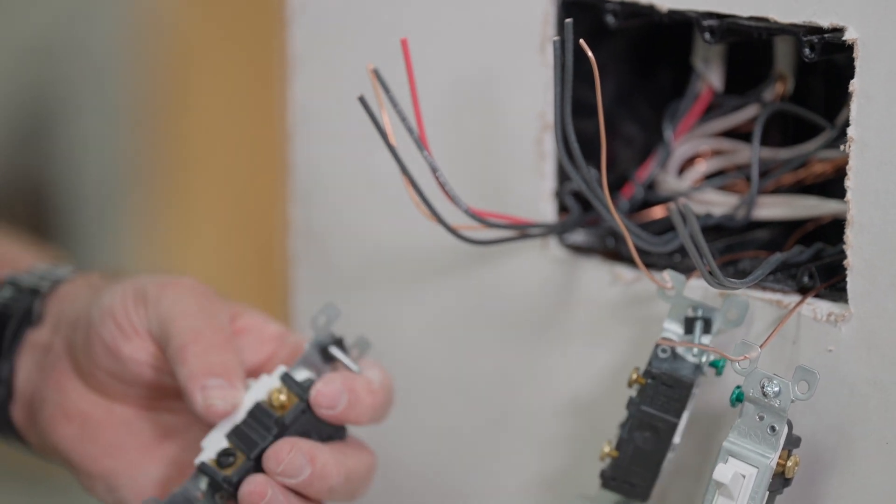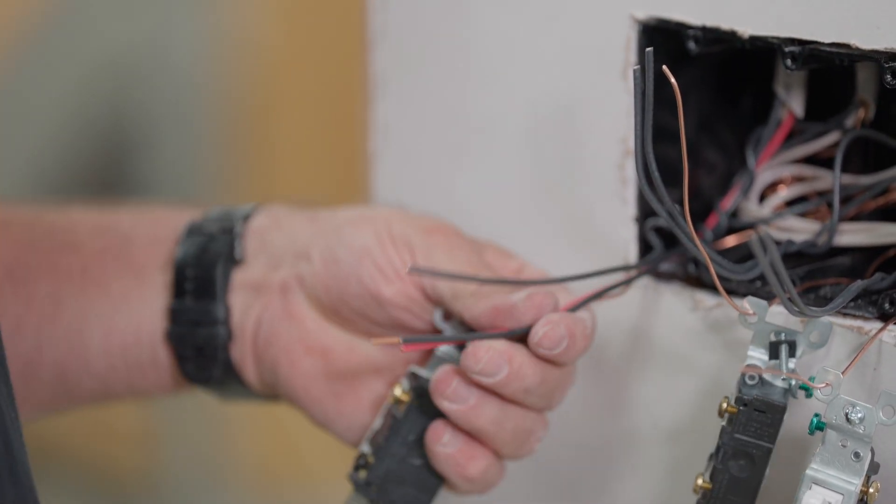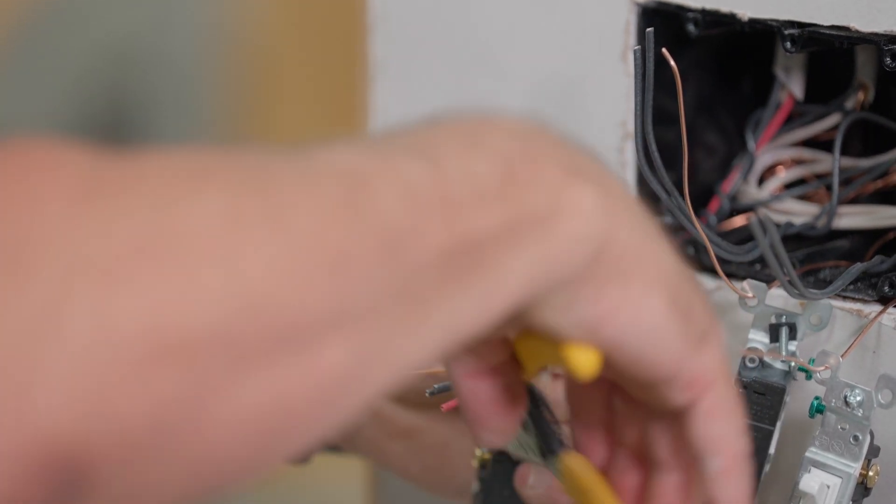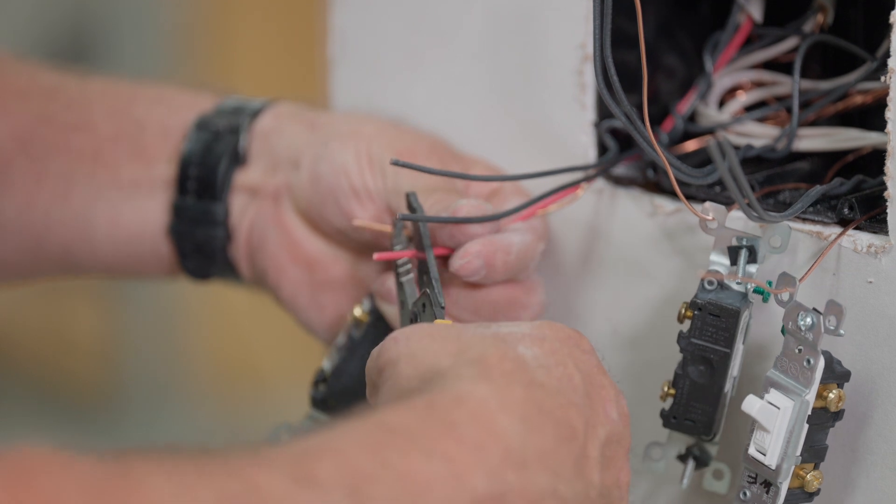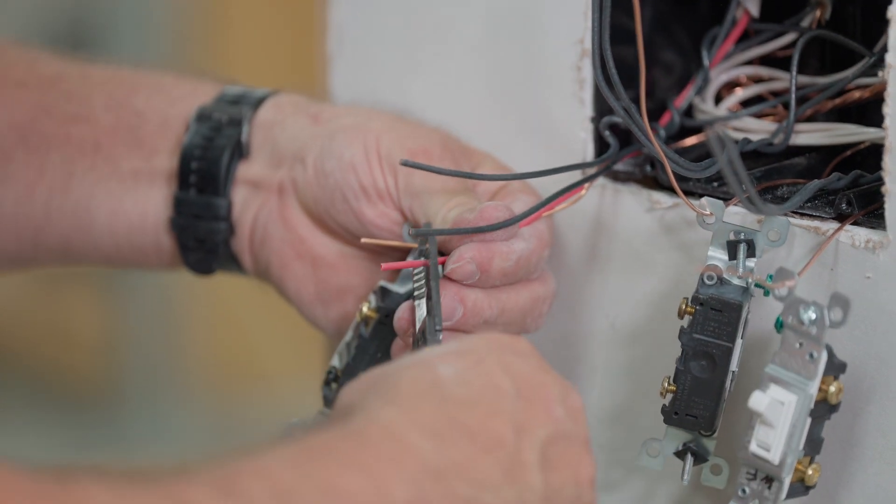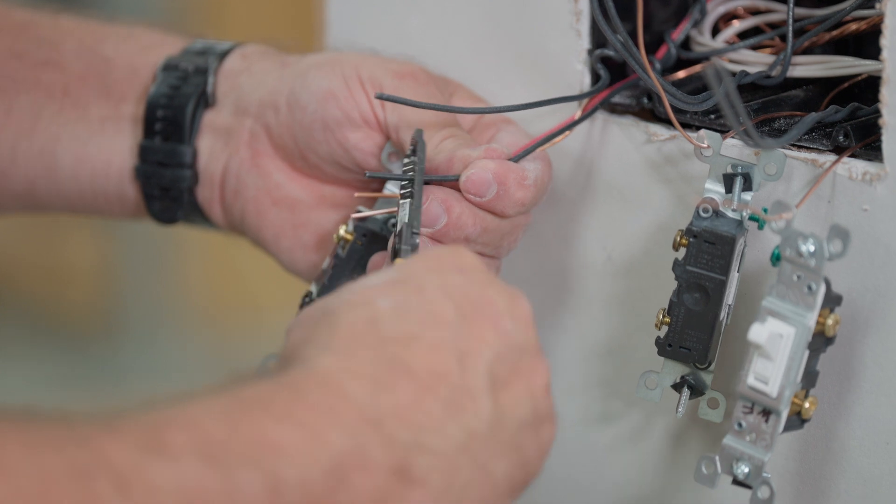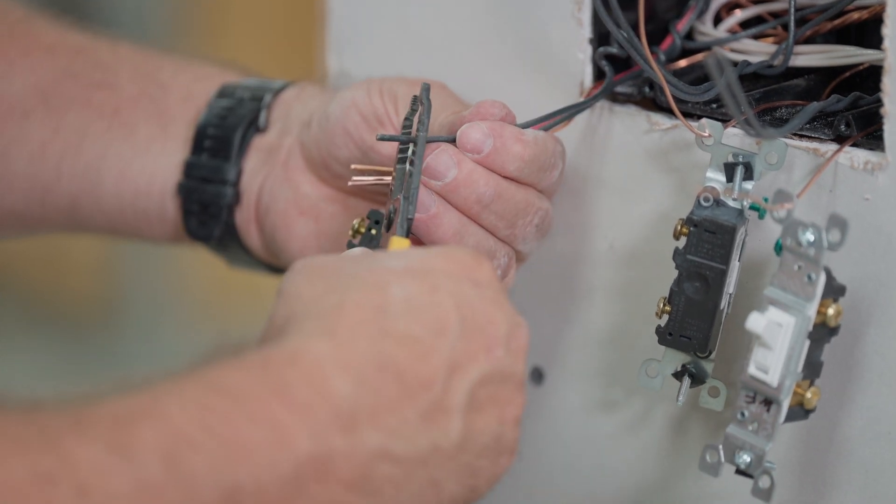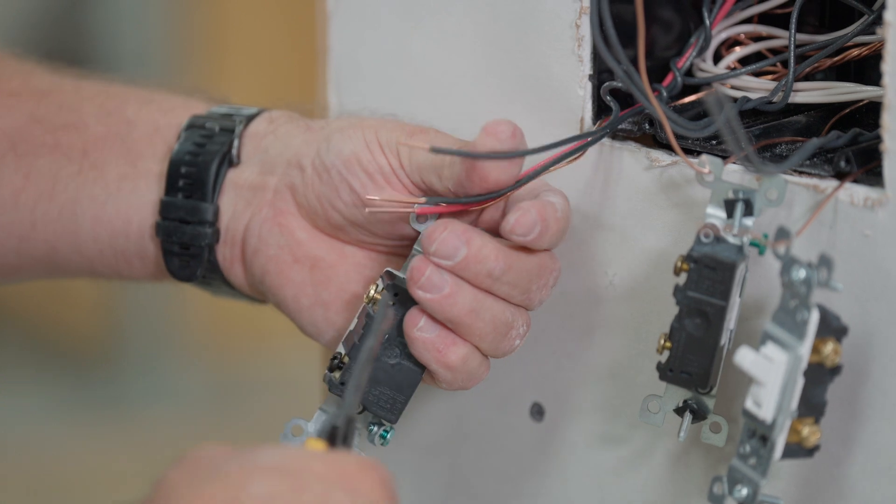So we'll take this first switch and strip these about the length that we need to. They're a little long, so I'm going to cut them a little shorter and then we're going to strip these. This is number fourteen wire so we can stab in. Remember, if it's number twelve wire, you're not allowed to use the stab-ins. It's only fourteen and below for stab-ins.